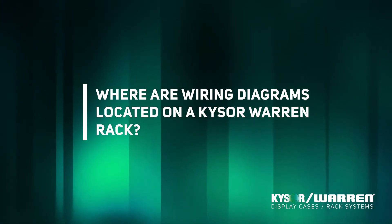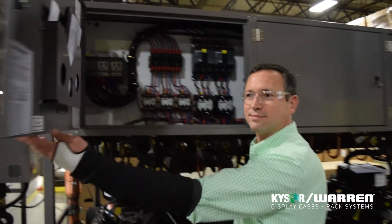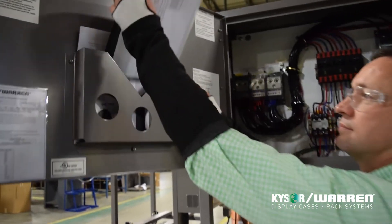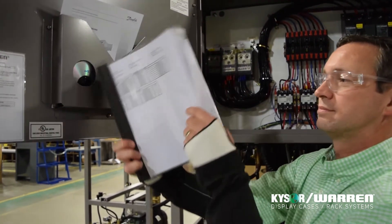Where is the wiring diagram located on a Kaiser Warren rack? Our diagrams are easy to find. They are placed in a folder and stored inside the electrical box on all of our rack systems.